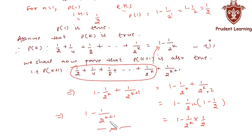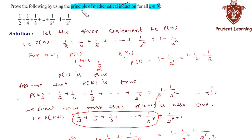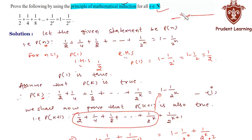Thus P(k+1) is true whenever P(k) is true. Hence by the principle of mathematical induction, P(n) is true for all natural numbers n. This completes our solution.